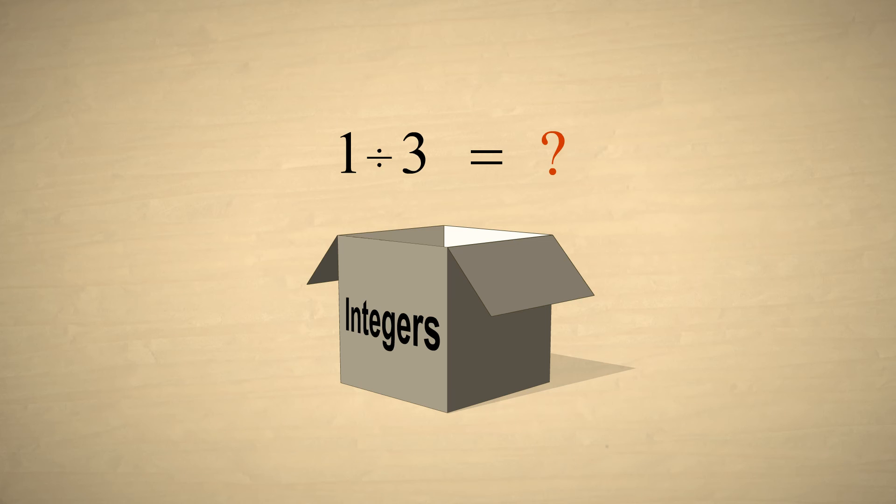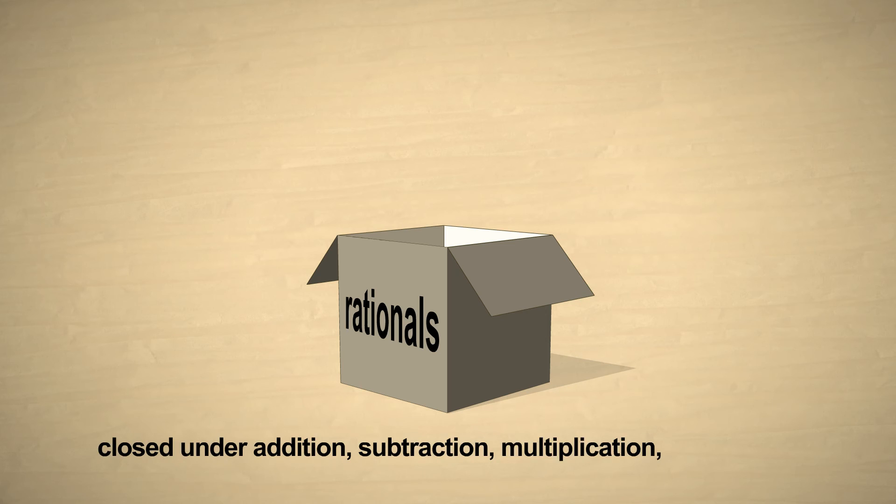To represent the result of division operations, we will have to expand our number system to include fractions. This collection of integers and fractions is called the rational numbers. Rational numbers are closed under addition, subtraction, multiplication, and division.